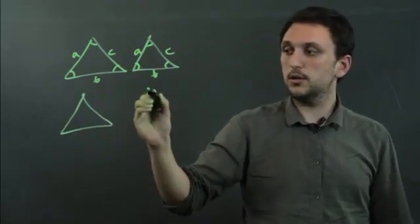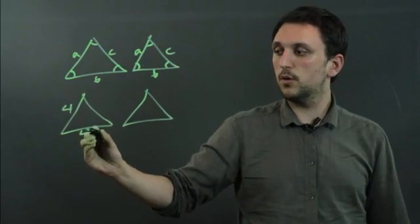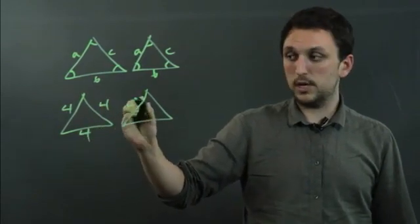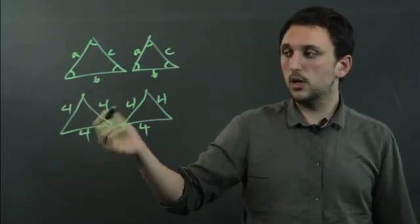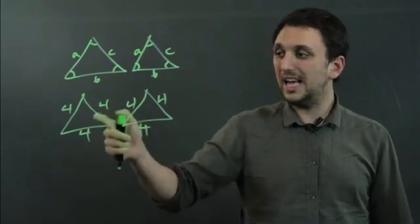If we have a triangle here that's 4, 4, and 4, this would have to be 4, 4, and 4, which would make both of these equilateral and both congruent.